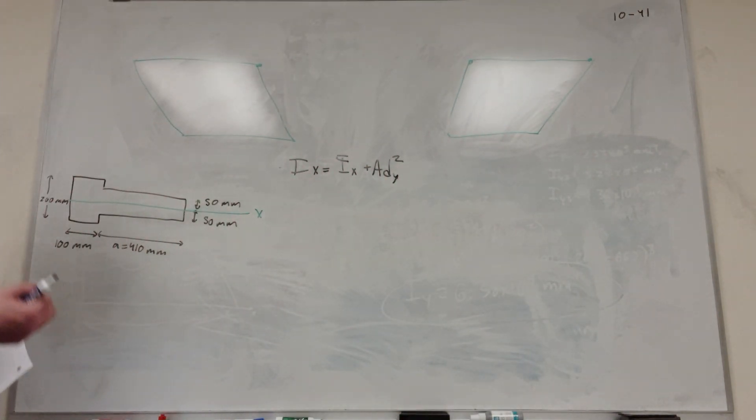When we have this complex shape, we want to break it down into simple shapes, just like finding center of mass. Let's put a line here and label this 1 and this 2. We're going to find 1 and 2 and then add them together to find the total moment of inertia.